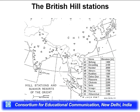Hill stations were established by the British due to the beautiful environment and natural beauty. Important hill stations include Shillong, Darjeeling, Nainital, Almora, Ranikhet, Dehradun, Mussoorie, Chakrata, Shimla, Srinagar, and others. The elevation of these hill stations ranges from approximately 1,400 to 2,200 meters.